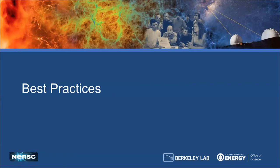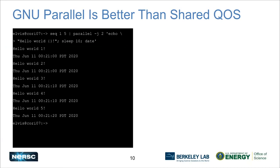Best practices: GNU parallel is better than using the Cori shared QoS, with one exception — if you only have one job that needs a few cores, go ahead and use the shared QoS. But most people using the shared QoS have hundreds or thousands of jobs. What ends up happening is each of those jobs is held by the two-jobs-per-user priority gain limit, so the actual throughput of all of them is pretty low. If you use GNU parallel to pack lots of shared jobs into a single job submission that uses maybe one entire node or multiple nodes, then you'll only wait in the queue once — reducing total QoS wait time significantly.